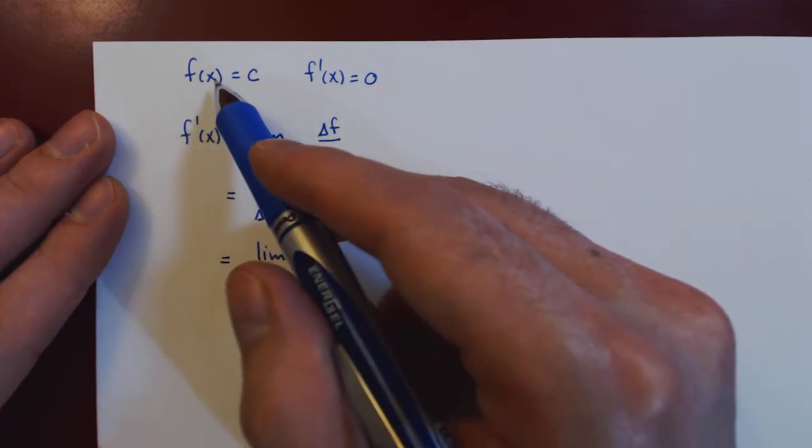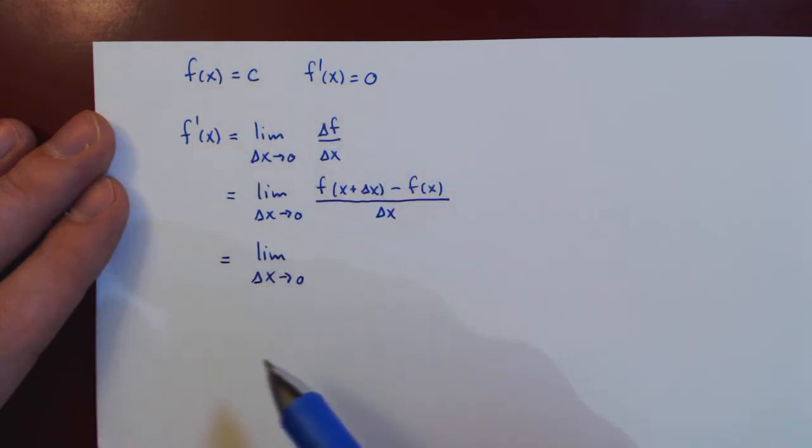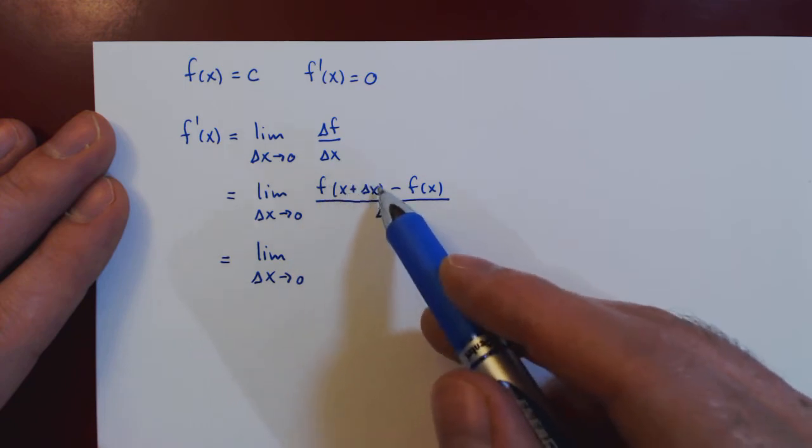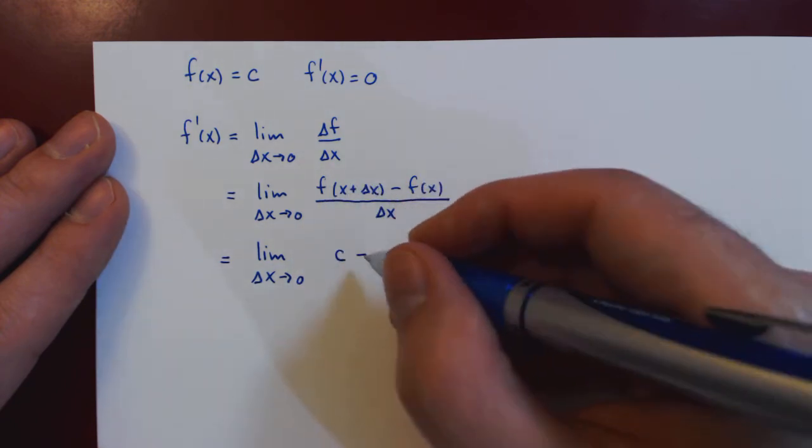And if we go back, well, f of x is equal to c for all values of x, so what this says is f of any value is equal to c, so f of x plus delta x is equal to c, f of x is equal to c.